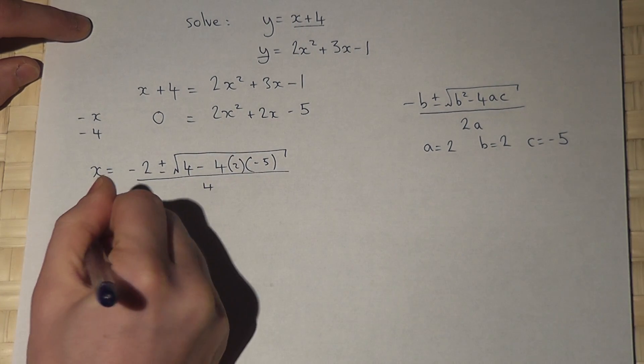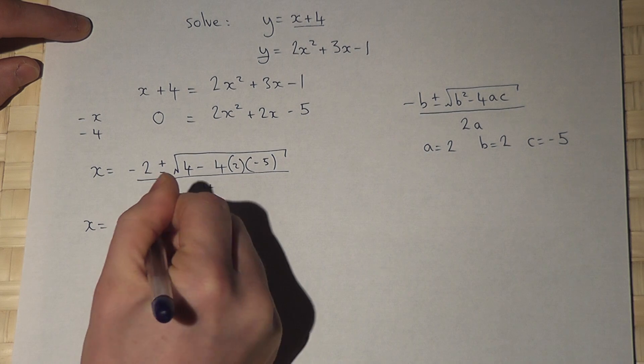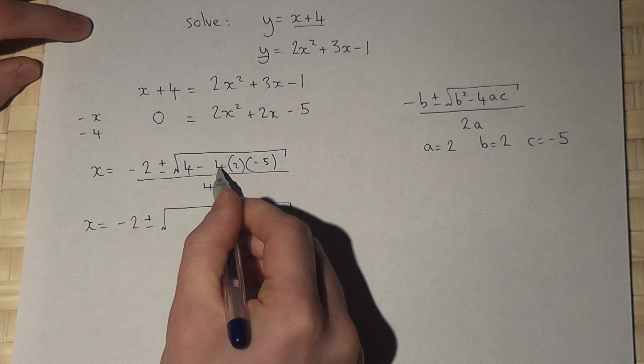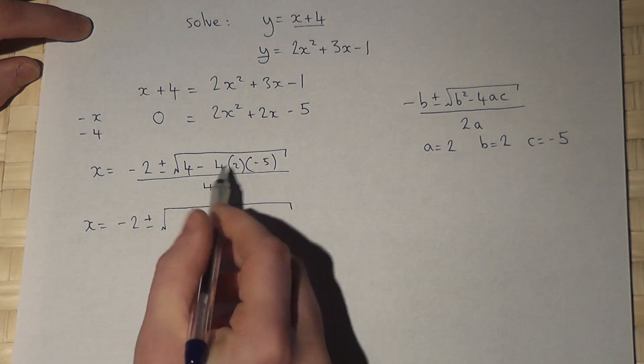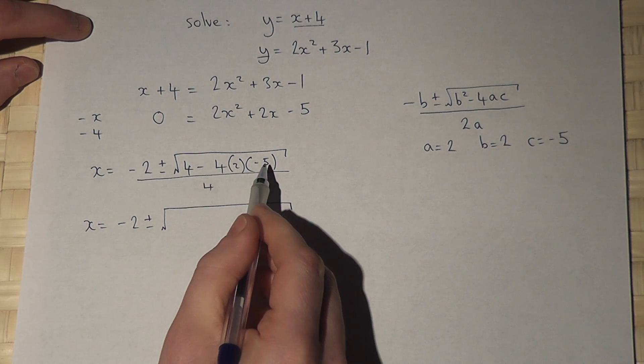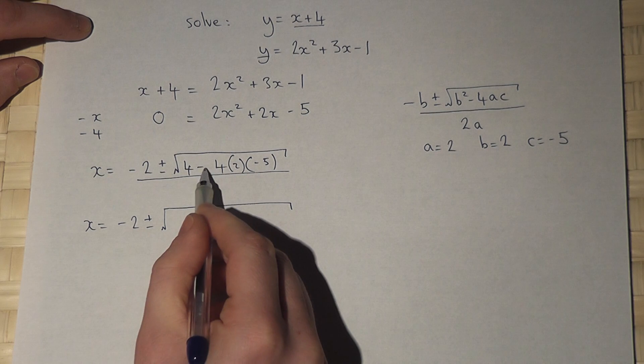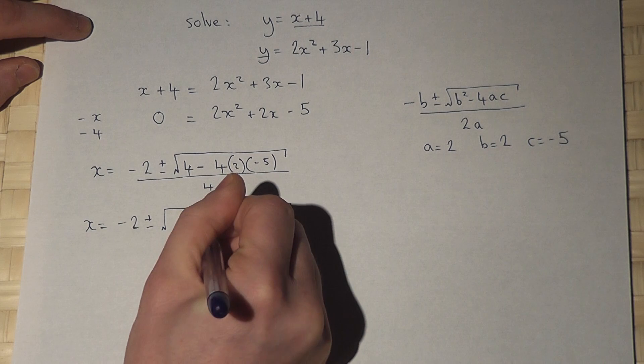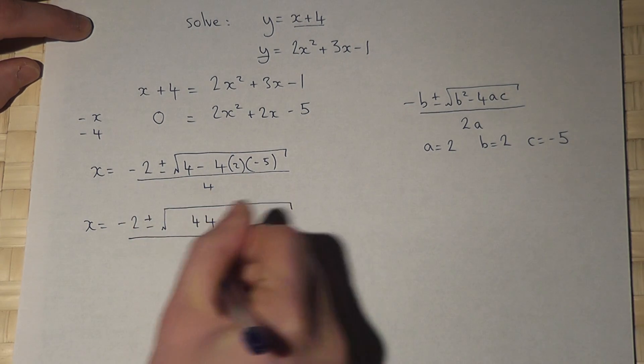Right then, I'll now work out the square root part. Now, we're taking away 4 times 2 times minus 5. 4 times 2 is 8, times 5 is 40. There are 2 minus signs there, so it's 4 plus 40, which is 44, all over 4.